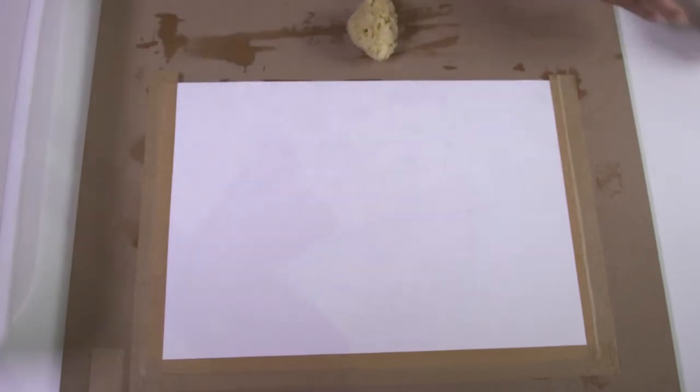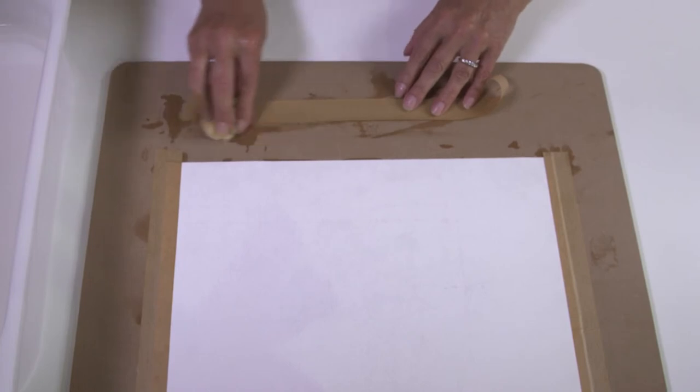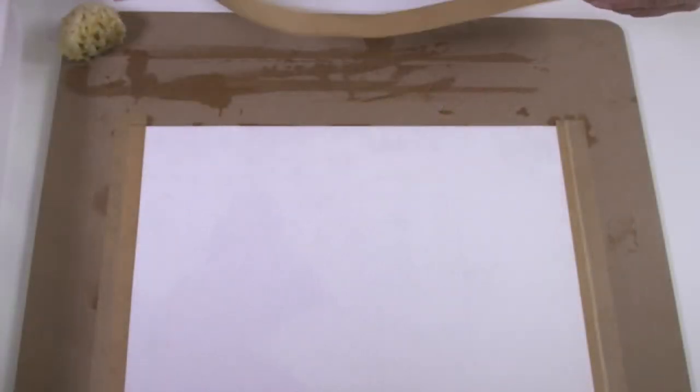Pre-stretching your paper means you can use a thinner paper with as much water as you like in your painting and the paper will stay flat as it dries.